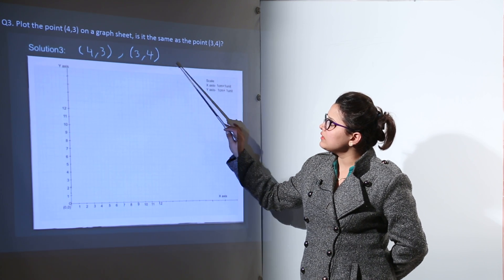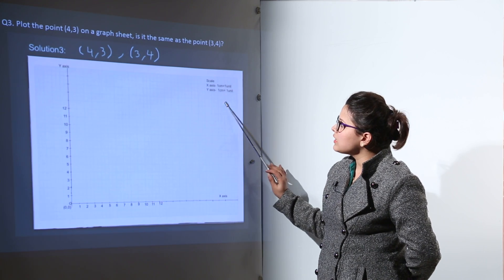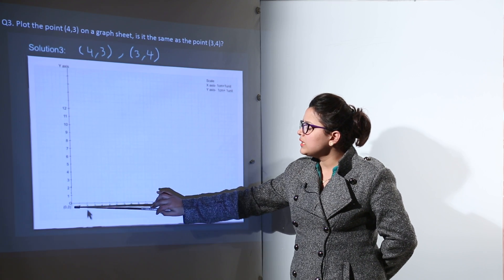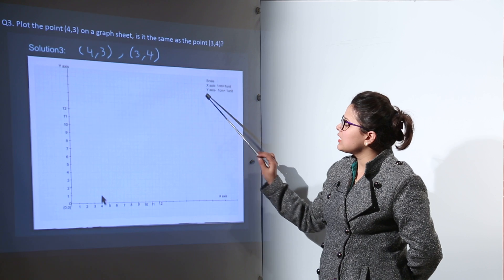Now 4, 3 and 3, 4 are to be plotted on a graph sheet. You take a graph sheet, make the axis, x-axis and y-axis, make them at the origin 0, 0 and mark the scale also.